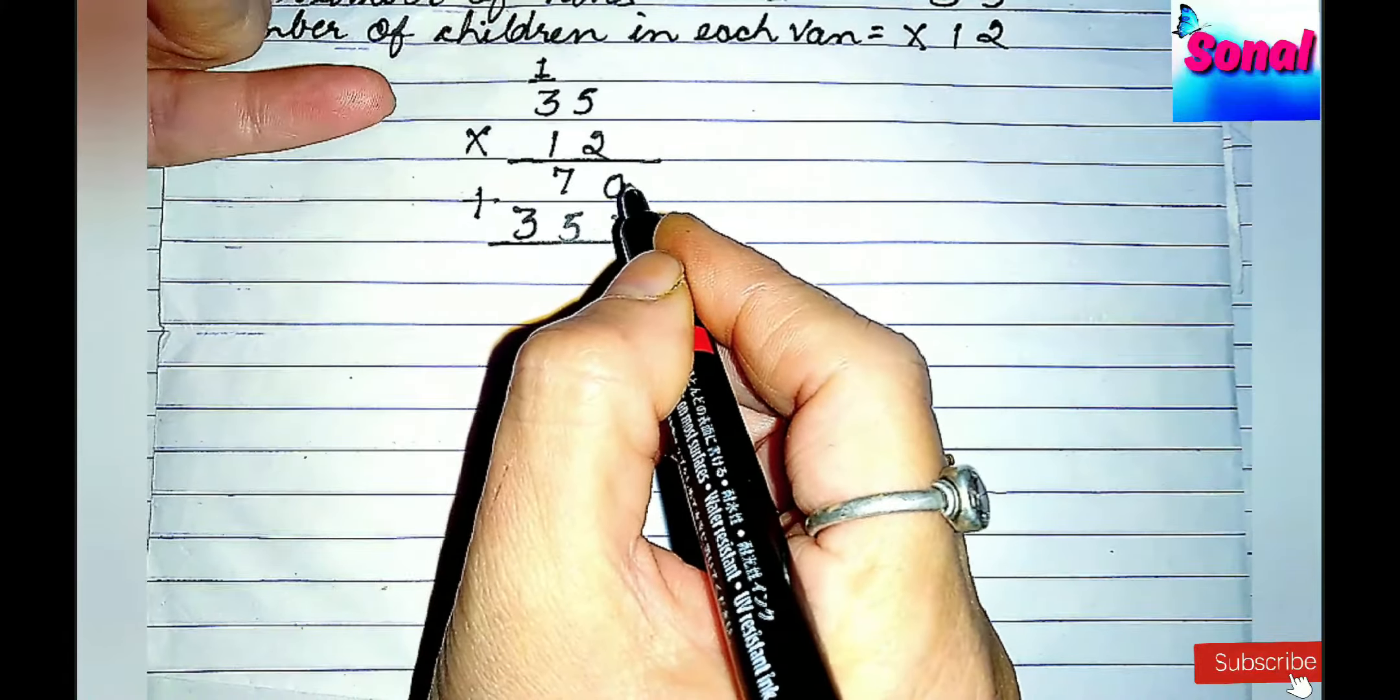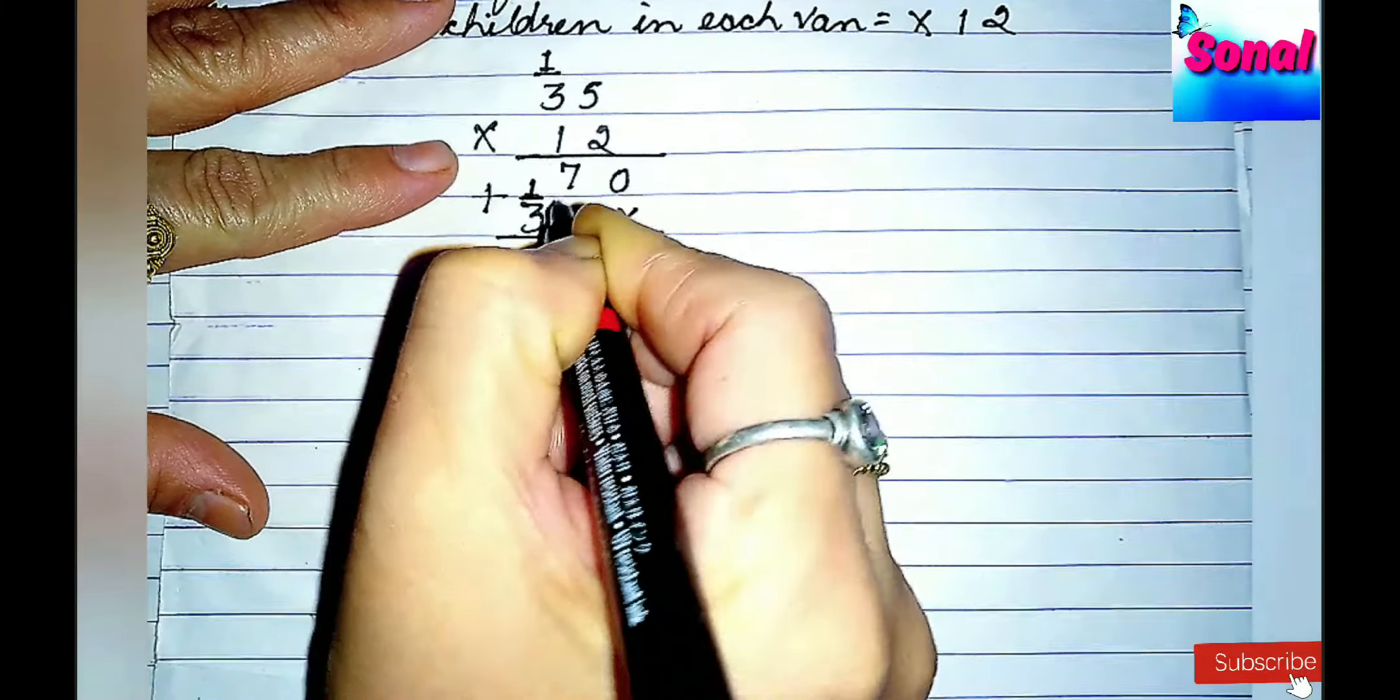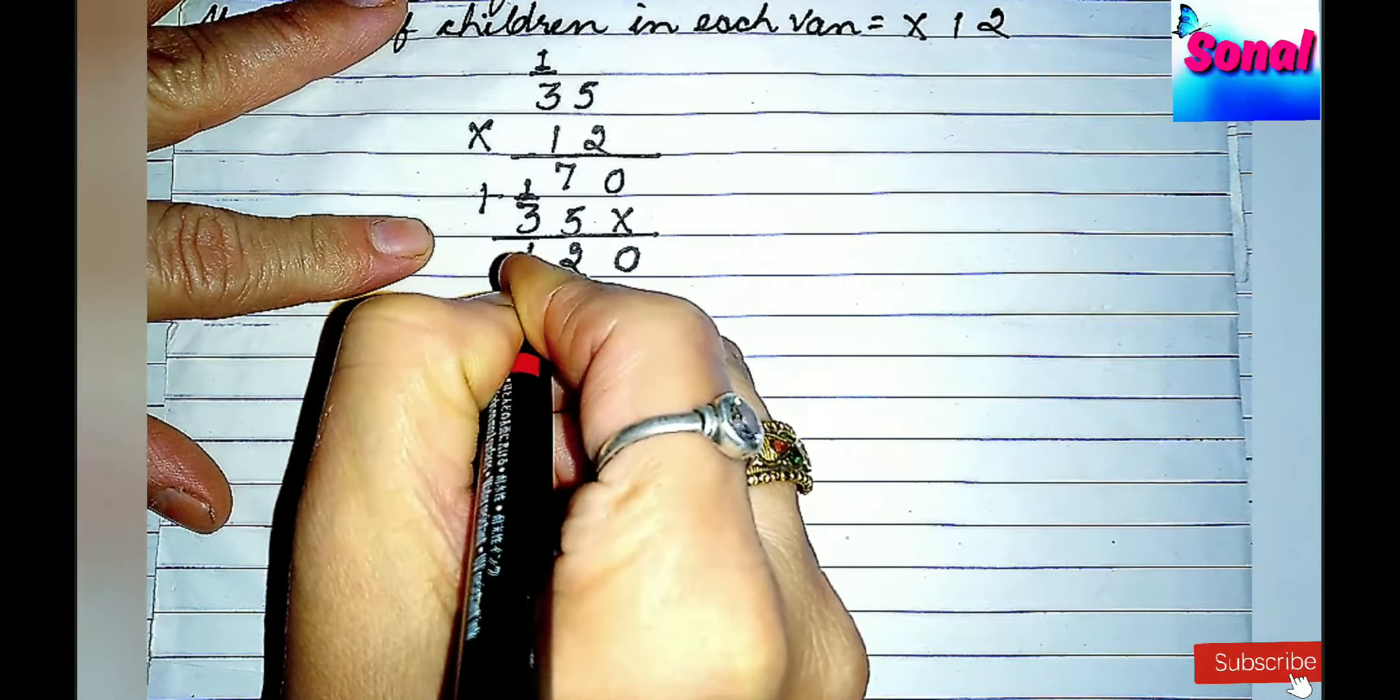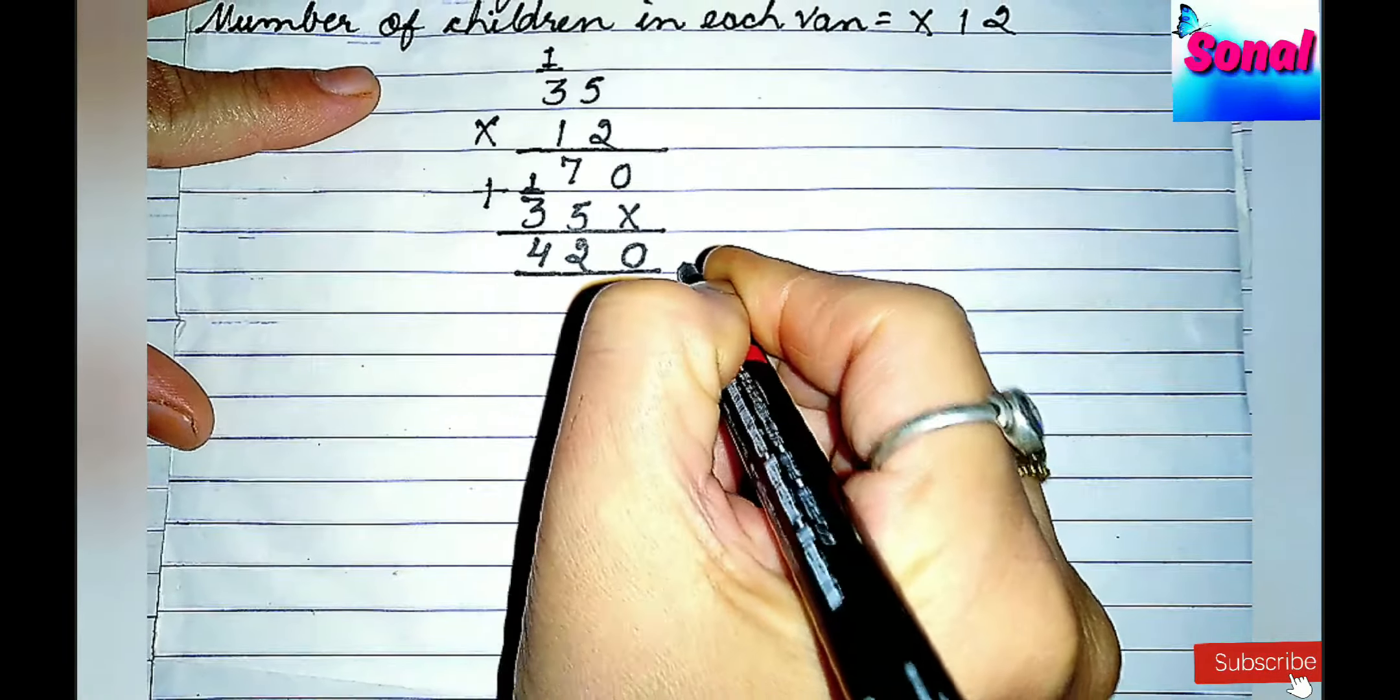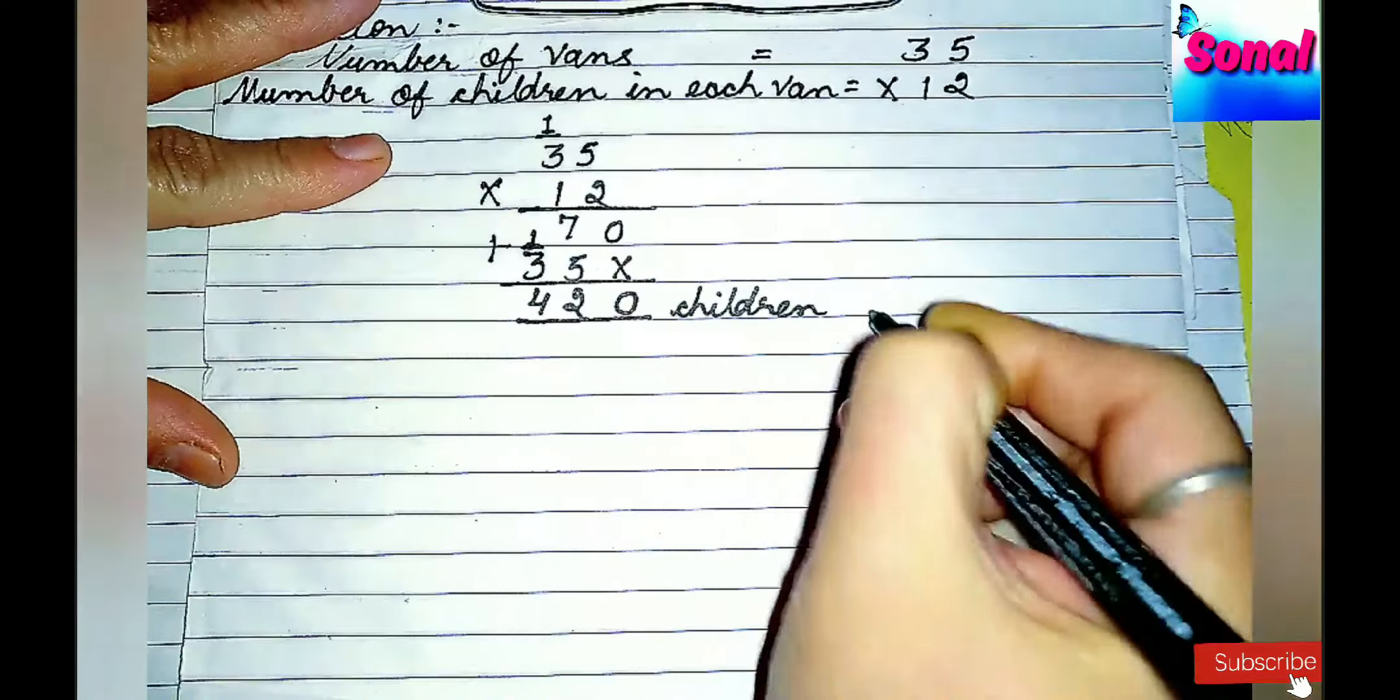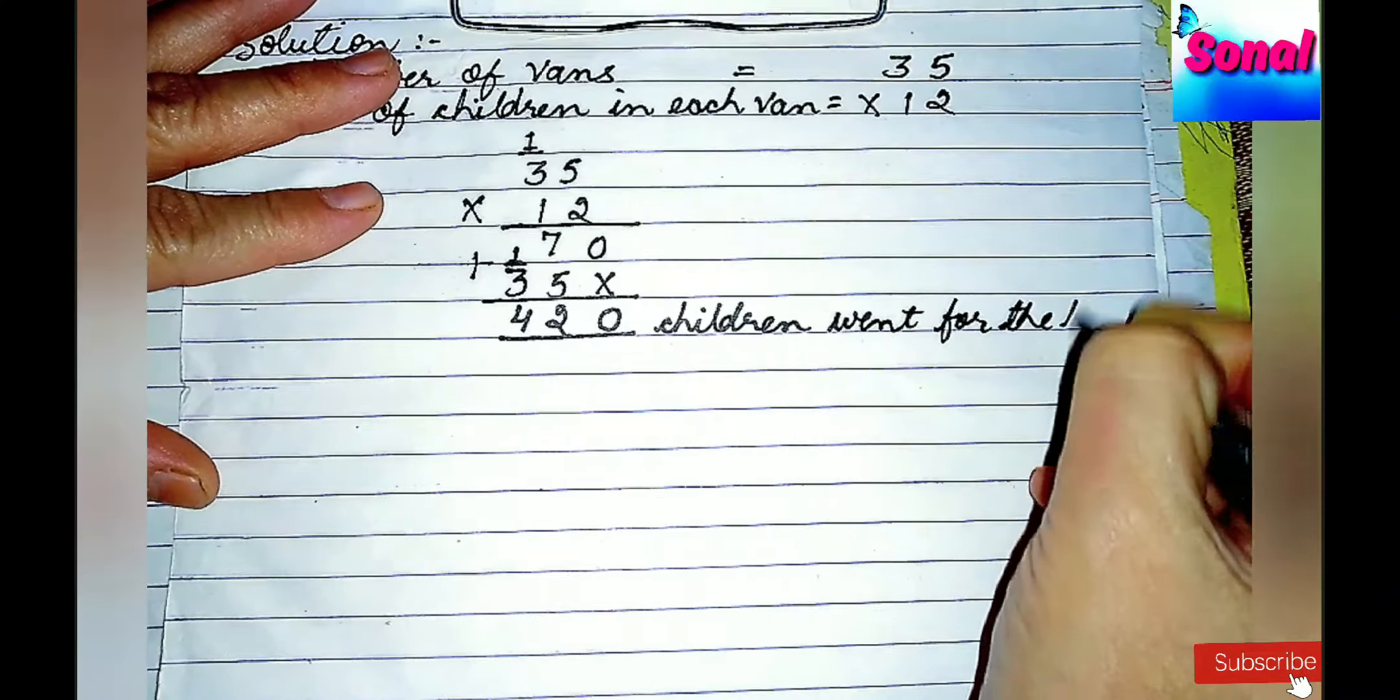Seven plus 5, eight, nine, ten, eleven and twelve. Twelve ka 2 aya, carry over 1. Three plus one, four. So, 420 children went for the picnic.